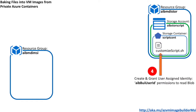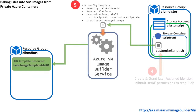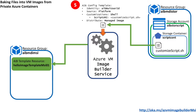Step four: you will create a user-assigned identity on the subscription and then grant read permissions to that blob. Inside the ImageBuilder configuration template you're going to pass in the identity that you created, and in the customizations for the shell customizer you're going to set the script URI to the URI of the customized script.sh.